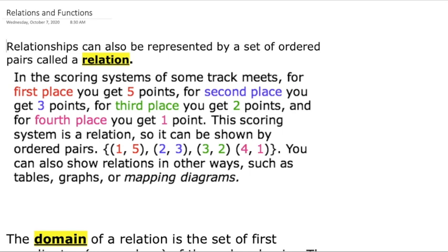We have this new type of notation which uses curly braces. Curly braces denote a set. A set allows us to look at these relations and say that only these relations are true for whatever we're looking at. For instance, there is no fifth place or sixth place — there's only these first four, and these are the points you get. A set basically defines what is actually capable of happening.